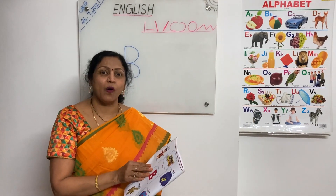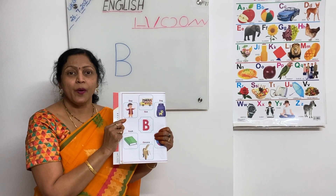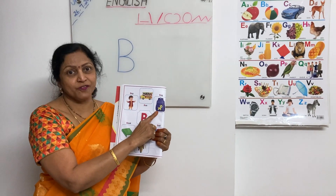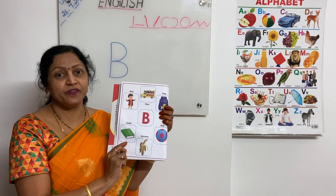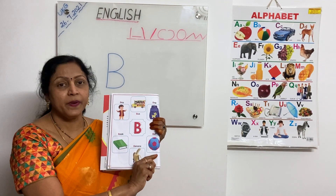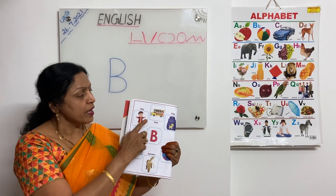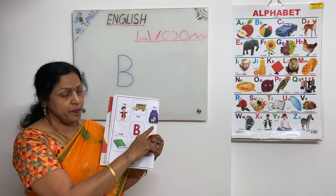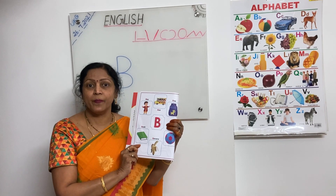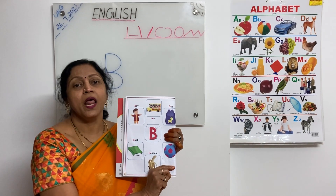Now let's sing a small rhyme for the letters. B is for boy, Buh Buh Buh. B is for bus, Buh Buh Buh. B is for bag, Buh Buh Buh. B is for banana, Buh Buh Buh. B is for ball, Buh Buh Buh.